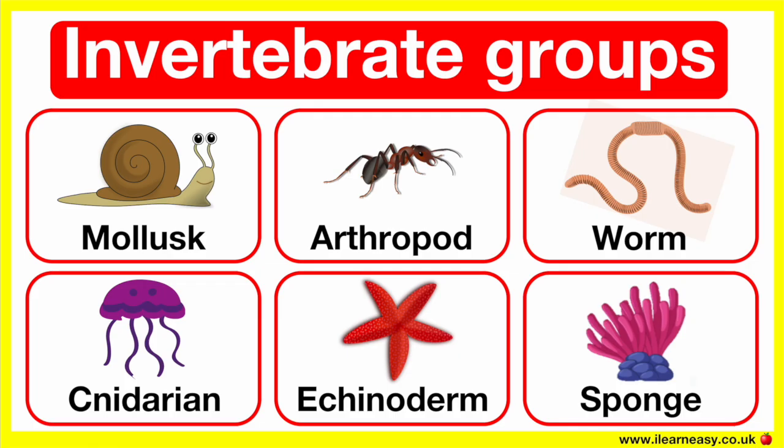Animals can either be vertebrates or invertebrates. Invertebrates are animals that don't have a backbone. There are also different types of invertebrates which we can put into groups.